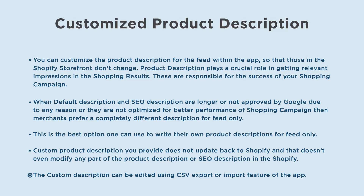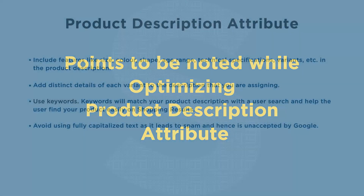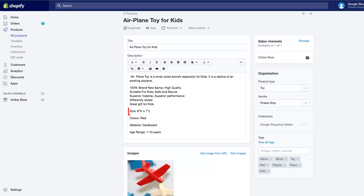The custom description can be edited using the CSV export or import feature of the app. Points to be noted while optimizing the product description attribute include features like size, color, shape, age range, technical specifications, variants, etc. in the product description.